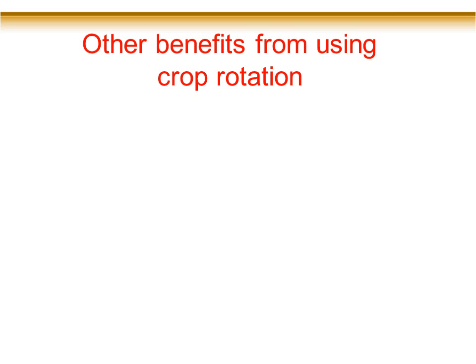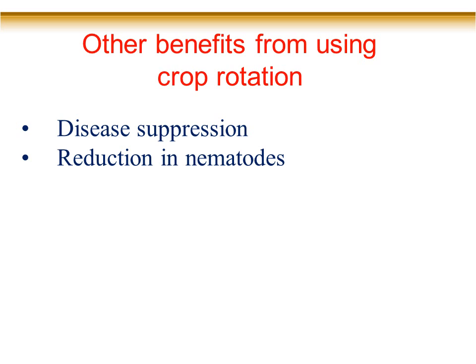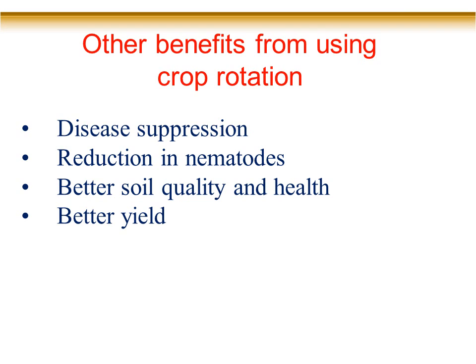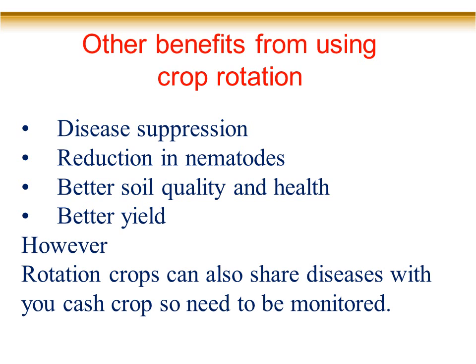Other benefits growers are seeing: less verticillium in their fields, fewer disease nematodes — those are two other major issues PEI growers are battling — and better soil quality, health, and better yield. However, when growing a rotation crop you have to watch for diseases that some rotation crops share with your cash crop. For example, brown mustard is susceptible to sclerotinia, so if a field has a lot of sclerotinia, you would not go in with mustard — you'd use something else.